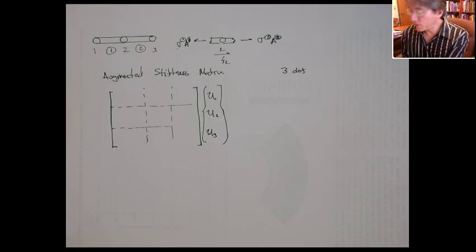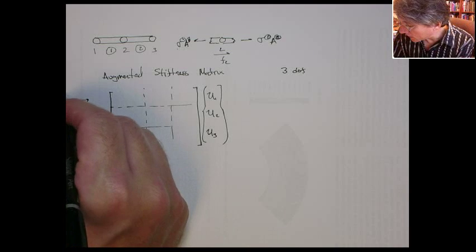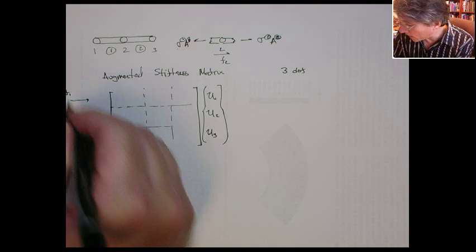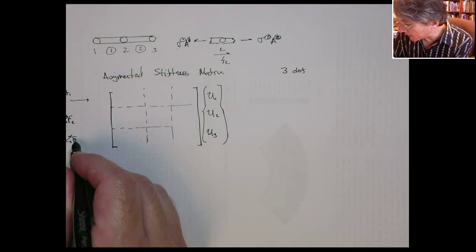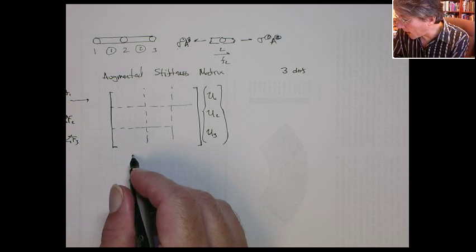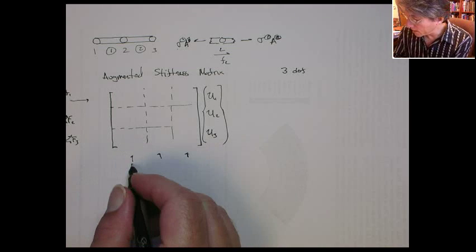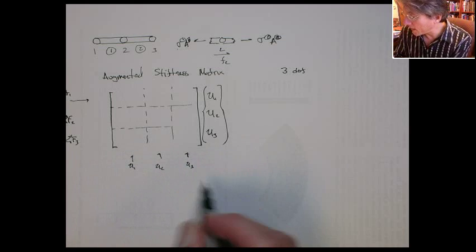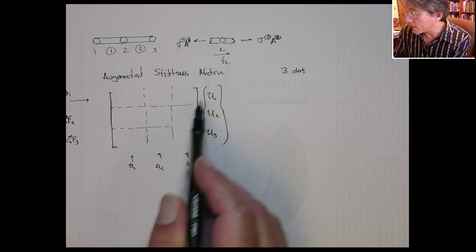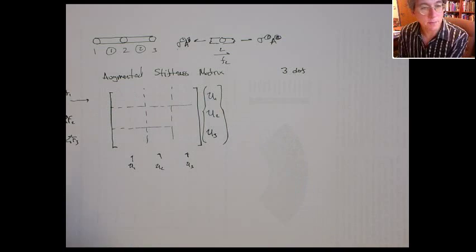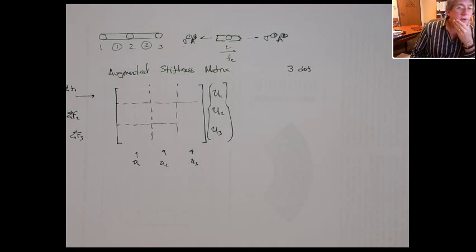And that's going to equal the external forces, F1, F2, F3. So if you think about it, each row corresponds to a sum of forces at node 1, sum of forces at node 2, and sum of forces at node 3. Whereas the columns are associated with the actual global degrees of freedom, U1, U2, and U3. And that comes about because of the way we do matrix vector multiplication, and you have the dot product of the row of the matrix with the column of the unknowns.